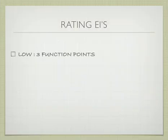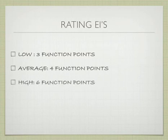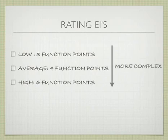A low EI has three function points. An average EI has four function points. And a high EI has six function points. Again, the more function points, the more complex.